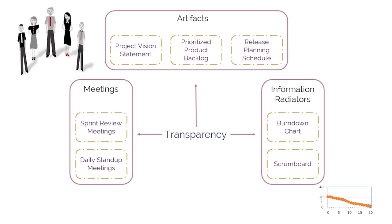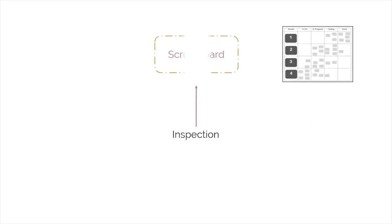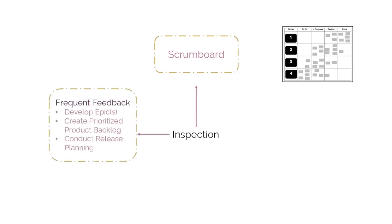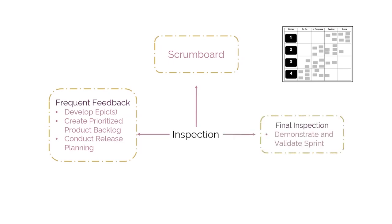The next characteristic of empirical process control is inspection. Scrum provides points of inspection using a common Scrum board and other information radiators which show the progress of the Scrum team on completing tasks in the current sprint. Feedback collected from the customer and other stakeholders during the develop epics, create prioritized product backlog, and conduct release planning processes give additional opportunities for inspection. The final point of inspection comes during the review meeting when the team seeks approval of deliverables from the product owner and customer in the demonstrate and validate sprint process.